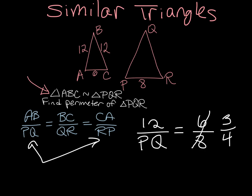And now cross multiply. I have 12 over PQ is equal to 3 over 4, and I want to cross multiply.